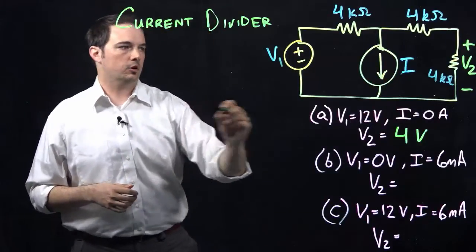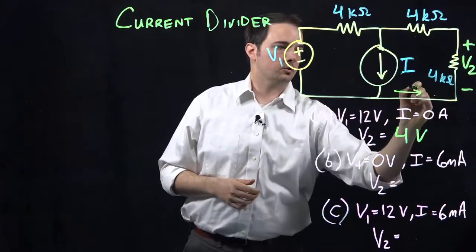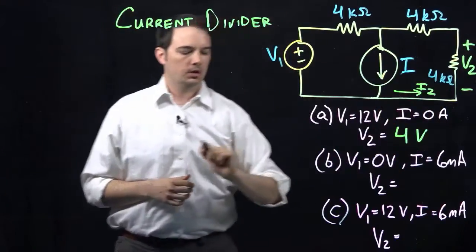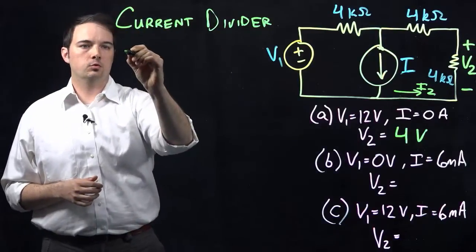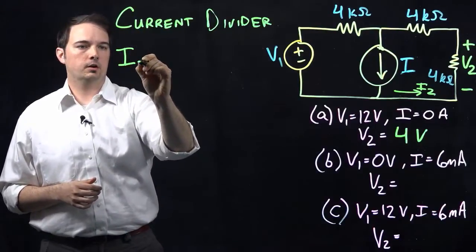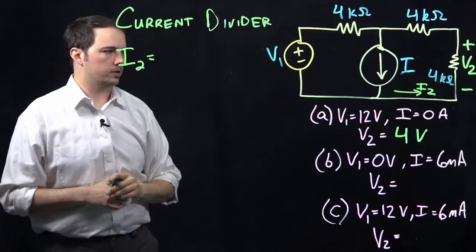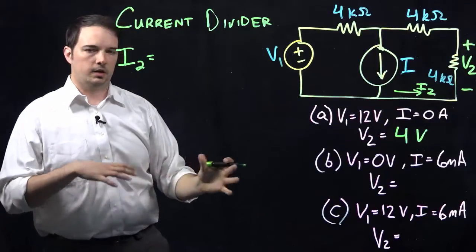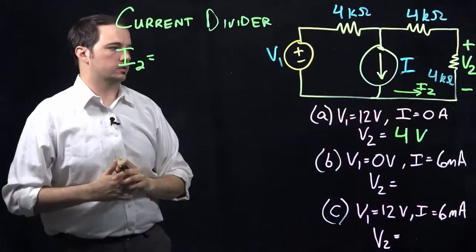So in order to set up the current, let's say that this is current, we'll call this I2, flowing through this branch here. So we could use the current divider rules to tell us that the current I2 is going to be equal to some ratio of the resistors that we have available.